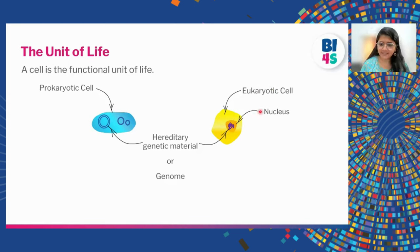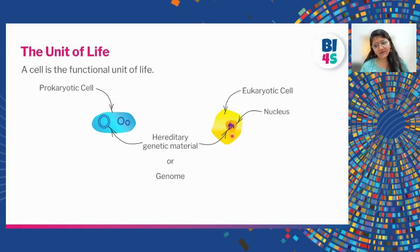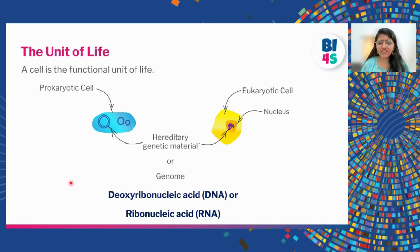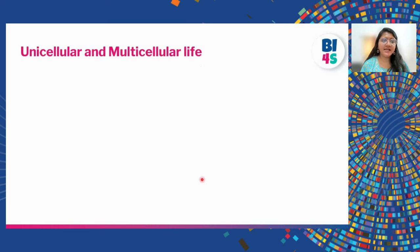One of the sub-compartments is called the nucleus, and it has a hereditary genetic material. The hereditary genetic material of each cell or any organism is called the genome. We also know that the genome can be made of either deoxyribonucleic acid (DNA) or ribonucleic acid (RNA).